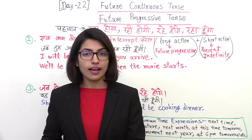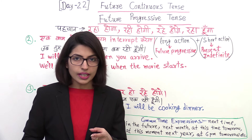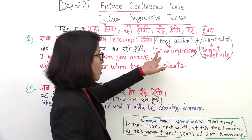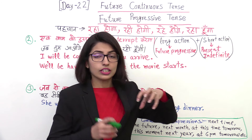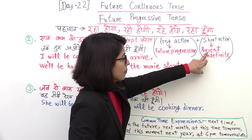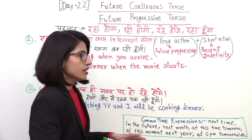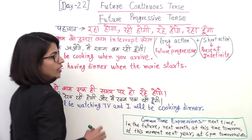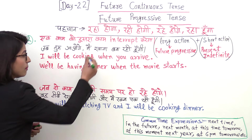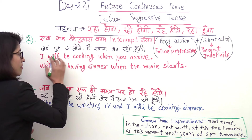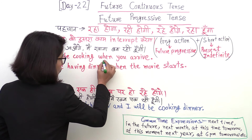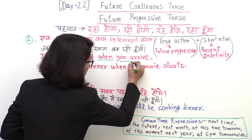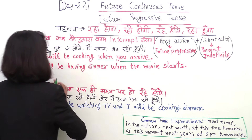The second point is: one action will interrupt the other. Someone is still working and it continues. The rule is: the long action — the work that will continue over time — we use Future Progressive for that. And the short action that interrupts it, we use Present Indefinite. For example: someone asks, 'When I come, what will you be doing?' I answer: 'When you come, I will be making food.' So the long action: I will be cooking — Future Progressive. The short action: when you arrive — Present Indefinite.